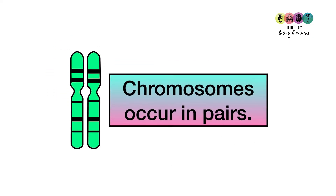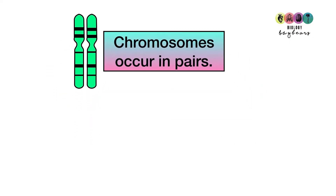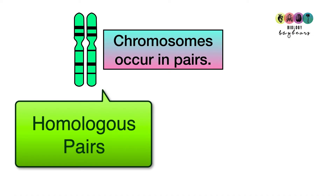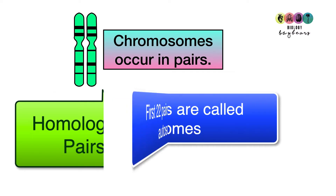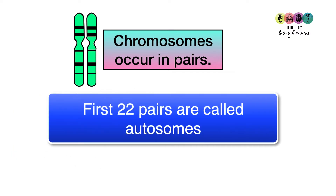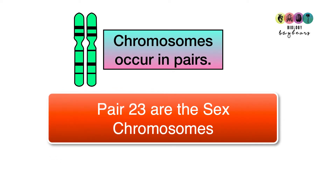Our chromosomes occur in pairs and they are described as being homologous pairs, because at similar locations on each pair of chromosomes you will find a gene for a particular trait, but you can have alternative versions of the same gene. The first 22 pairs are called the autosomes and the final pair, pair 23, is known as the sex chromosomes.